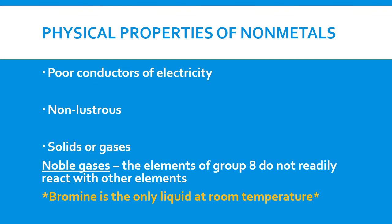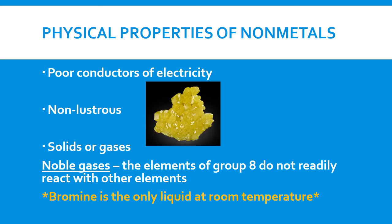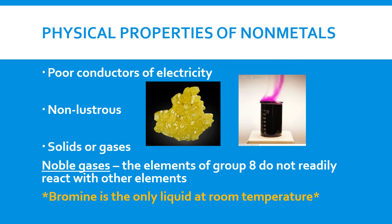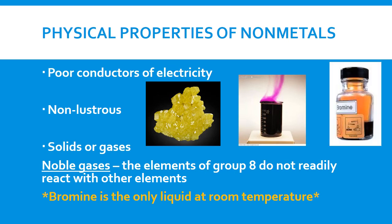Your non-metals exhibit basically the opposite physical properties of metals. They're poor conductors of electricity. They're non-lustrous. So that means they don't have a shine. And they can either be solids or gases. So they can exist as solids or gases. And we talked about noble gases before. These are elements in group 8A or 18 and they do not readily react with other elements. All your non-metals will either be solids or gases at room temperature except bromine, which is a liquid at room temperature.